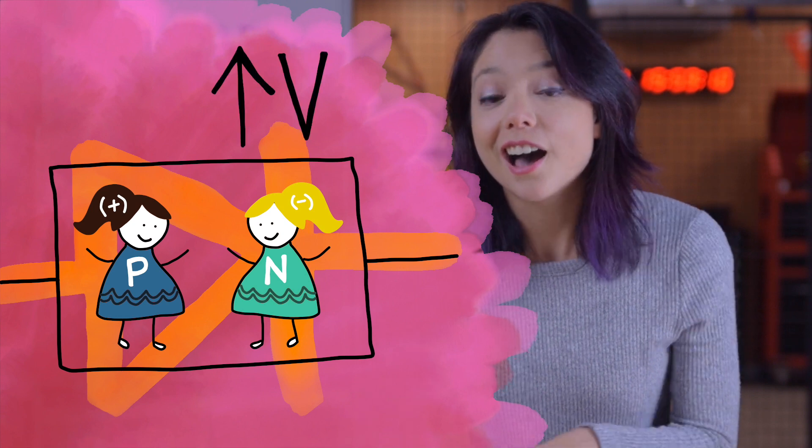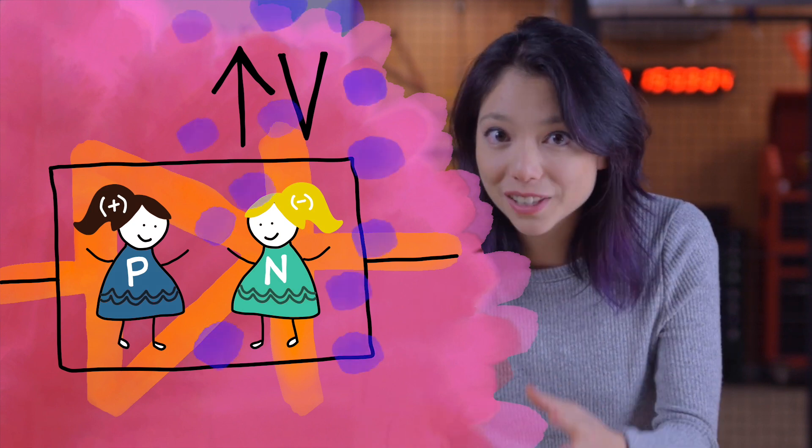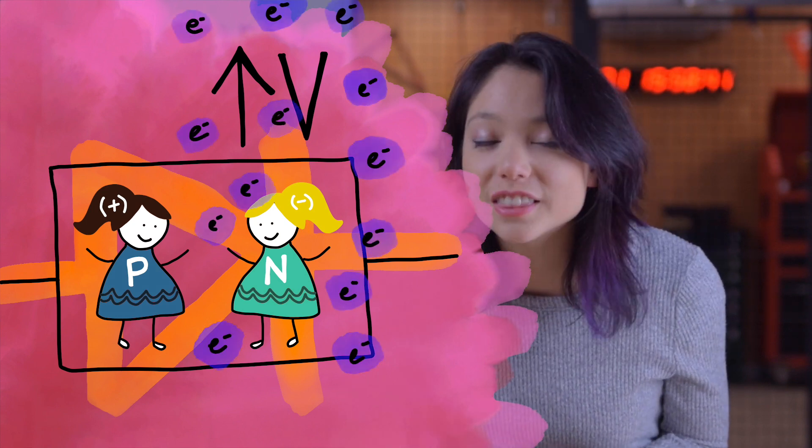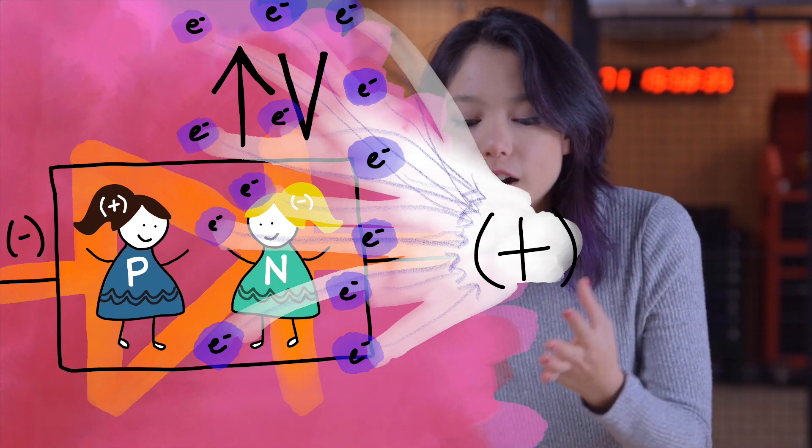Reverse bias is when you give a higher voltage to the N side, or the negative side of the diode, meaning the side that already has a whole bunch of electrons. The extra electrons on the N side want to go to that positive voltage source instead of the P side of the diode, and therefore current will not flow through your diode. But in reality, because nothing is perfect, a small amount of current will inevitably leak past the diode, and it is proportional to the voltage applied. So you can think of reverse biased diodes kind of like a clog in a pipe, where if you add enough pressure, or voltage, the clog will eventually break down, and water will flow freely through the pipe, or current will flow through the diode as if it was just a wire.